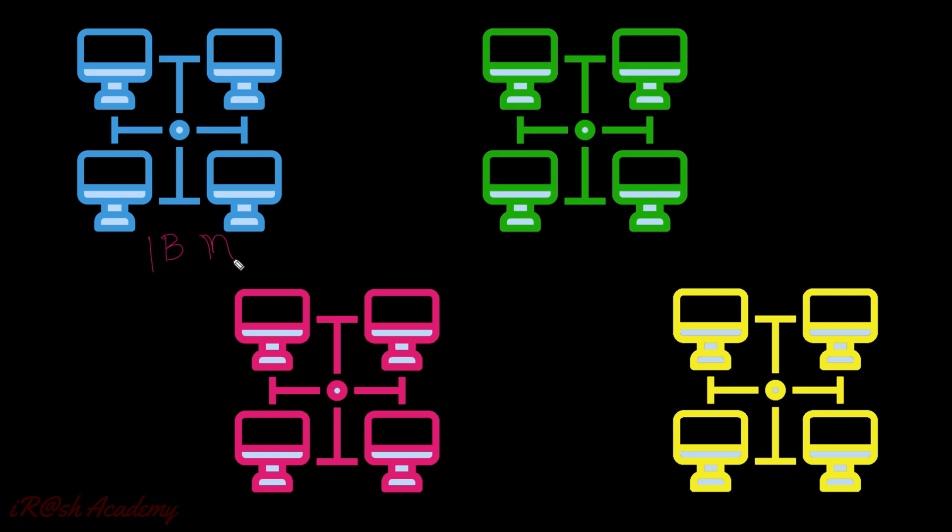In the same way, another company called Macintosh says that we are the manufacturer of Macintosh computers and we can create a network. All the computers in that network can communicate together, but the condition is all the computers must be from Macintosh. The scenario was that computers from a specific manufacturer can communicate together by creating a network, but they cannot communicate with computers from another manufacturer.